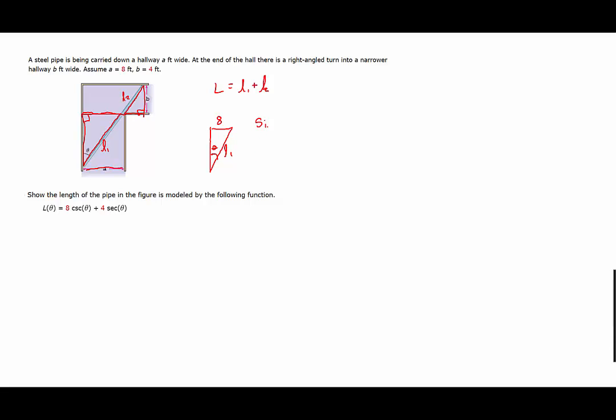The sine of theta would be opposite over hypotenuse. So 8 over L1. Solving for L1, we would have L1 equals 8 over the sine of theta. But this could also be expressed as 8 times the cosecant of theta.